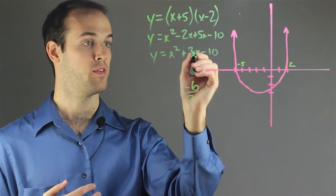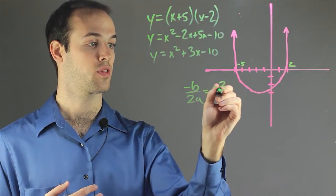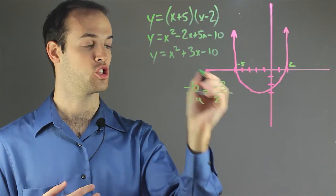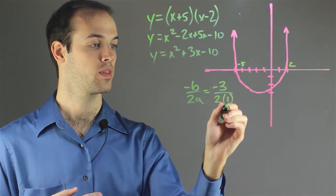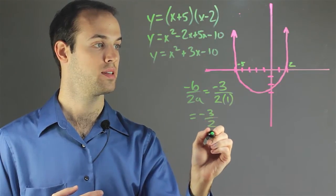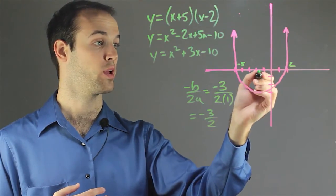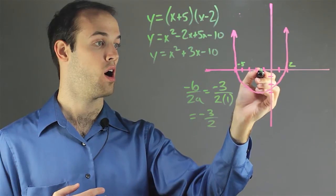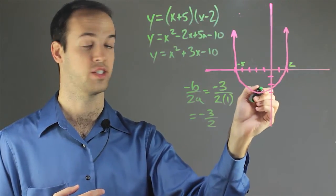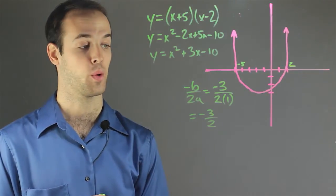And that's going to be our b value is 3, so we're going to have negative 3 and 2 times a, which is just 1 in this case. So that's going to get our x coordinate to be negative 3 halves. And you can see that if we go to negative 3 halves on this graph, which is about 1 and a half, we're actually going to be very close to where the vertex is of the problem that we were given.